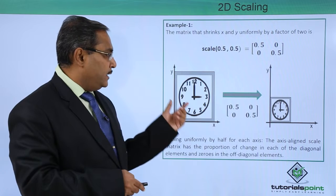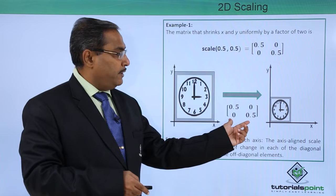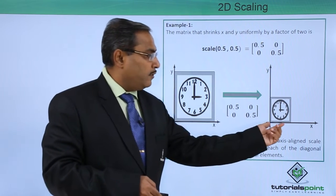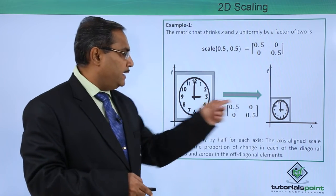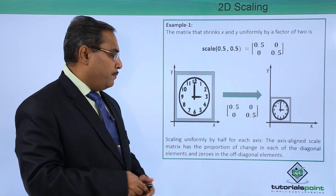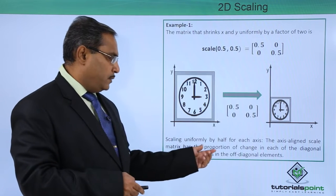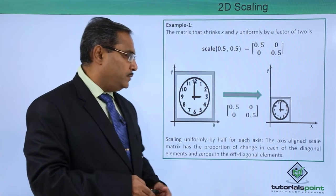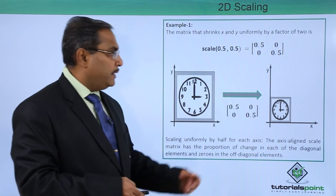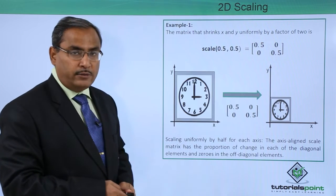The matrix has been represented. Let us suppose this is one diagram we are having and this is the respective scaling matrix. Along the x-axis the scaling has been done for 0.5 half of the length. Now, the height if you consider has become half of that. Scaling uniformly by half for each axis, the axis-aligned scale matrix has the proportion of change in each of the diagonal elements and 0s in the off-diagonal elements. We are having this 0.5 in the diagonal element and 0s in the off-diagonal elements.